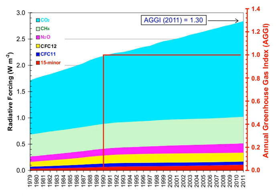Without greenhouse gases, the average temperature of Earth's surface would be about minus 18 degrees Celsius (0 degrees Fahrenheit), rather than the present average of 15 degrees Celsius. The atmospheres of Venus, Mars, and Titan also contain greenhouse gases.